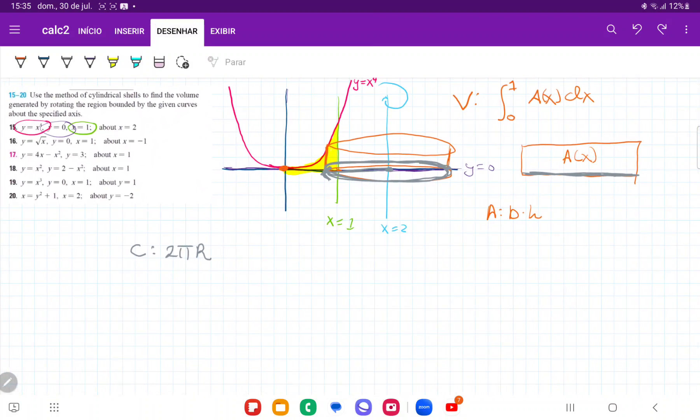So we have here, which is 2 pi times 2 minus x. That's the radius of my circumference. So this base here is given by 2 pi times 2 minus x.